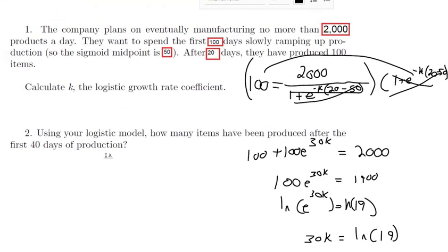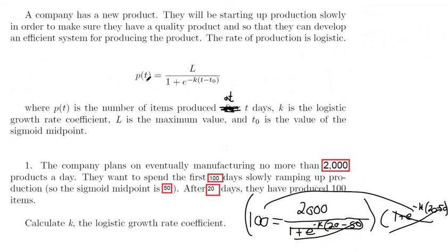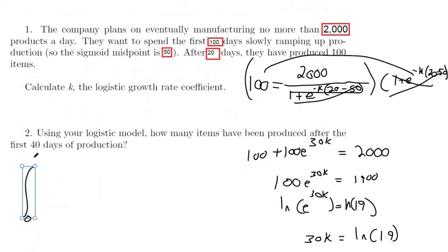And then for part two, it says using this model, now that we know what L is, now that we know what k is, t is going to be a variable in this next step. But t sub 0 is still the sigmoid midpoint. So we're supposed to find out the amount of items produced after 40 days of production. So you want to take the production equation, and you want to calculate all the different items we've produced, not just on day 0, day 1, day 2. You could do that as a discrete function, but since we're in a calculus class, we'll find the integral from 0 to 40. That will tell us the number of items we've produced.